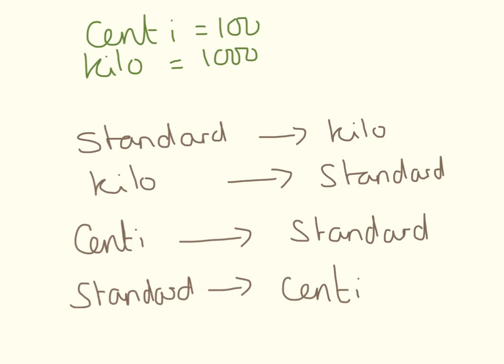Very briefly, centi means 100 and kilo means 1000. We can have kilowatts, kilojoules, kilometres. To get from our standard units to something that is kilo, we need to divide by 1000. And to go from kilo to our standard units, we need to times by 1000.